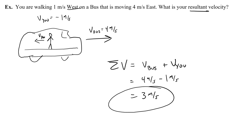So we would say that this is your velocity relative to the ground. Or if there was someone on the ground outside of the bus looking at you, they would see you actually moving forward as the bus moves forward. But because you're walking to the back of the bus, you wouldn't be moving as fast as the bus is. You'd be moving slightly slower.